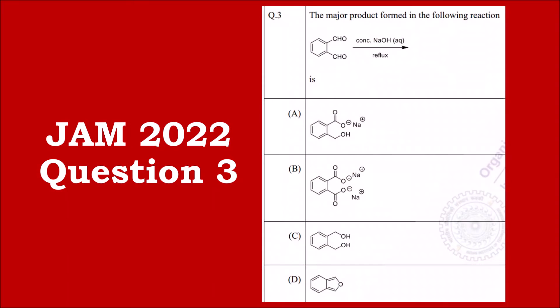Hello everyone, welcome to Chemazon Complete Chemistry. In today's video we are going to solve the third question of JAM 2022 paper. Let us first read the question: the major product formed in the following reaction is. Here, what is the reactant that is given to us?